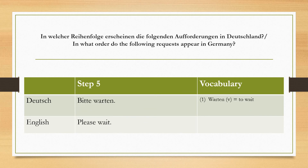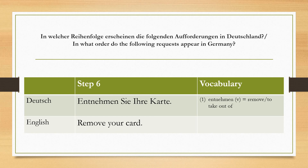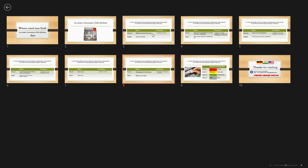Step five is 'warten' — to wait a bit. Everyone knows 'warten' as it is frequently used at A1 and A2 levels. Step six is 'Entnehmen Sie Ihre Karte' — remove or take out your card. 'Entnehmen' means to take something out; at the end you are taking your card with you from the ATM machine.